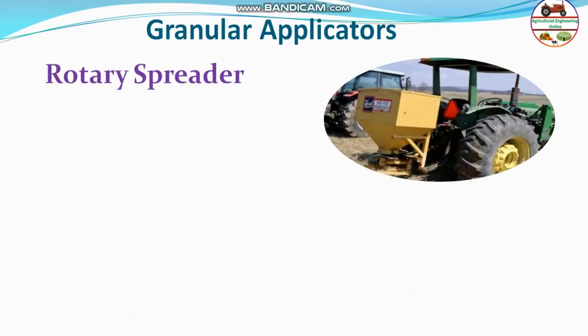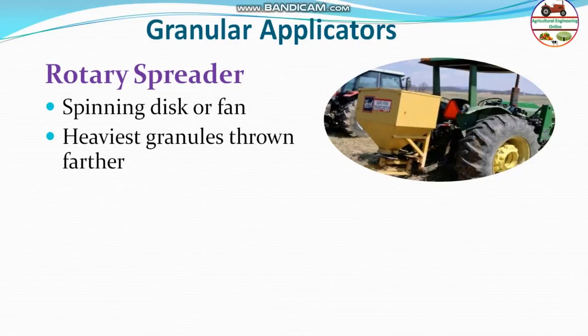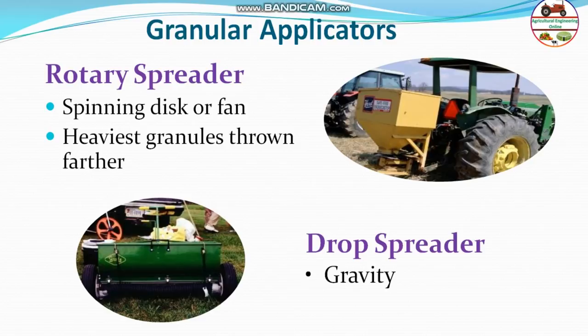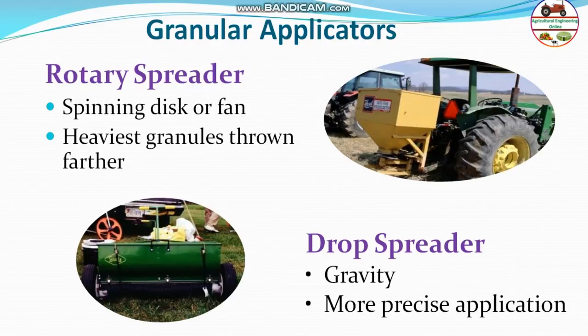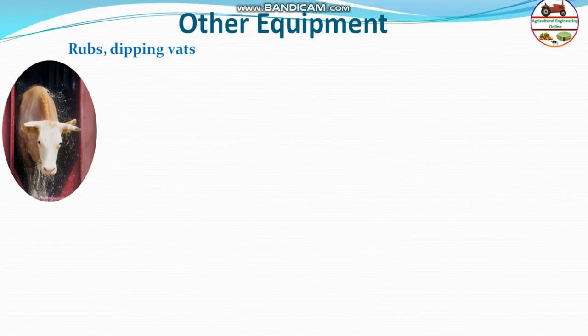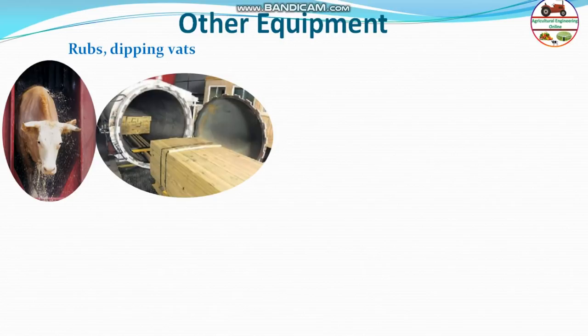The rotary spreader uses a spinning disk that throws heavier granular material farther and drops smaller particles near the center, making it more of a broadcast application. Drop spreaders drop material by gravity directly below. Dips or dipping vats are used for veterinary animals or treating wood against termites by dipping them into a chemical solution.